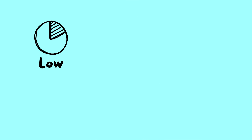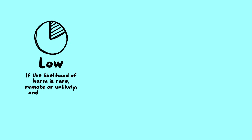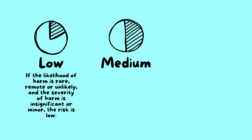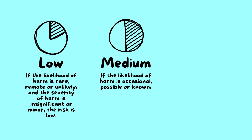Low: if the likelihood of harm is rare, remote, or unlikely, and the severity of harm is insignificant or minor, the risk is low. Medium: if the likelihood of harm is occasional, possible, or known, and the severity of harm is moderate health damage or injury, the risk is medium.